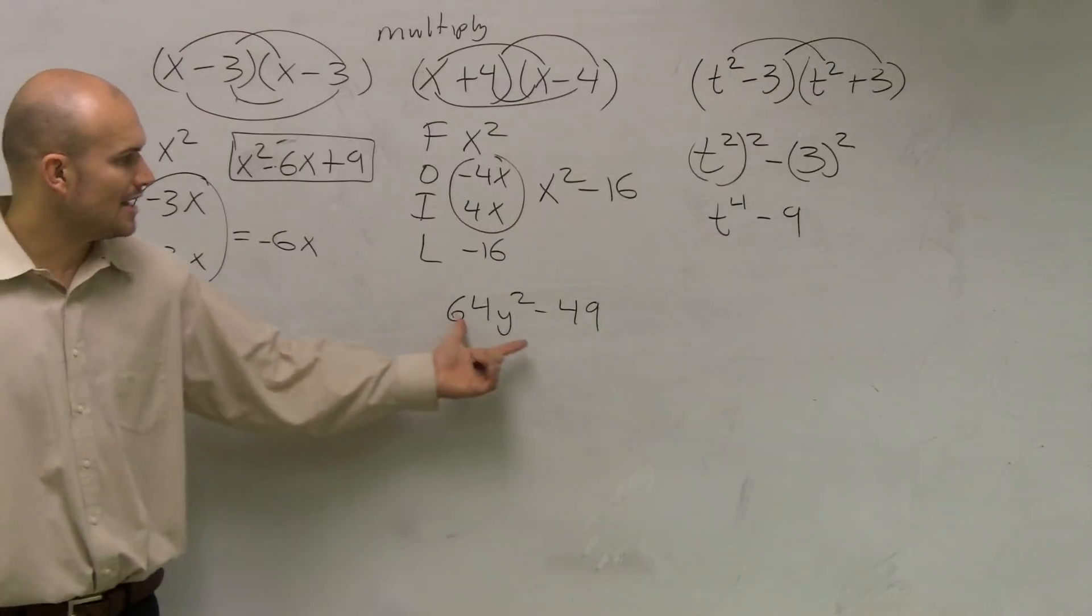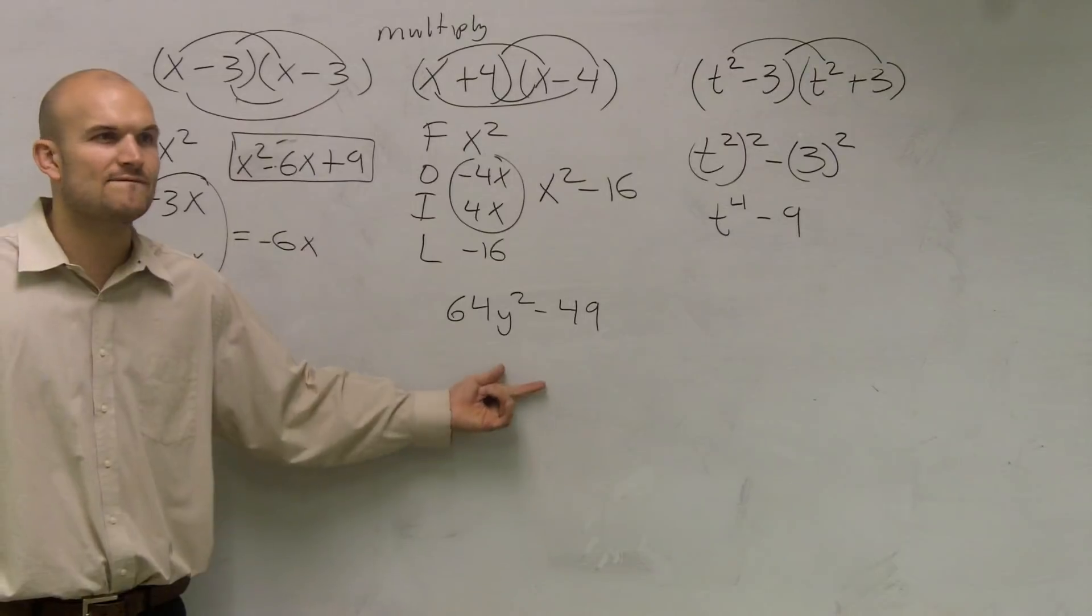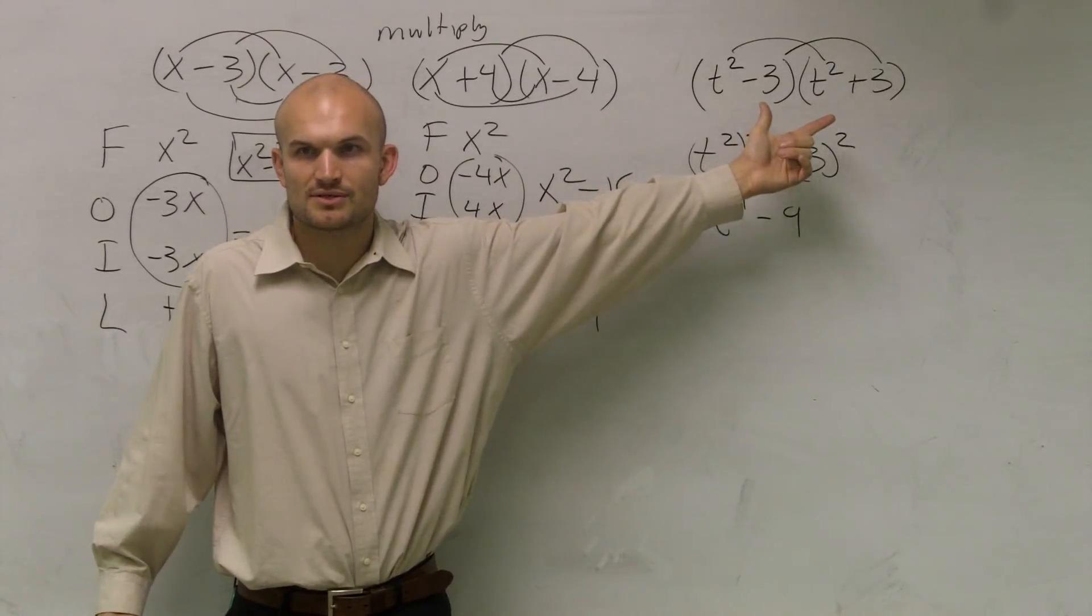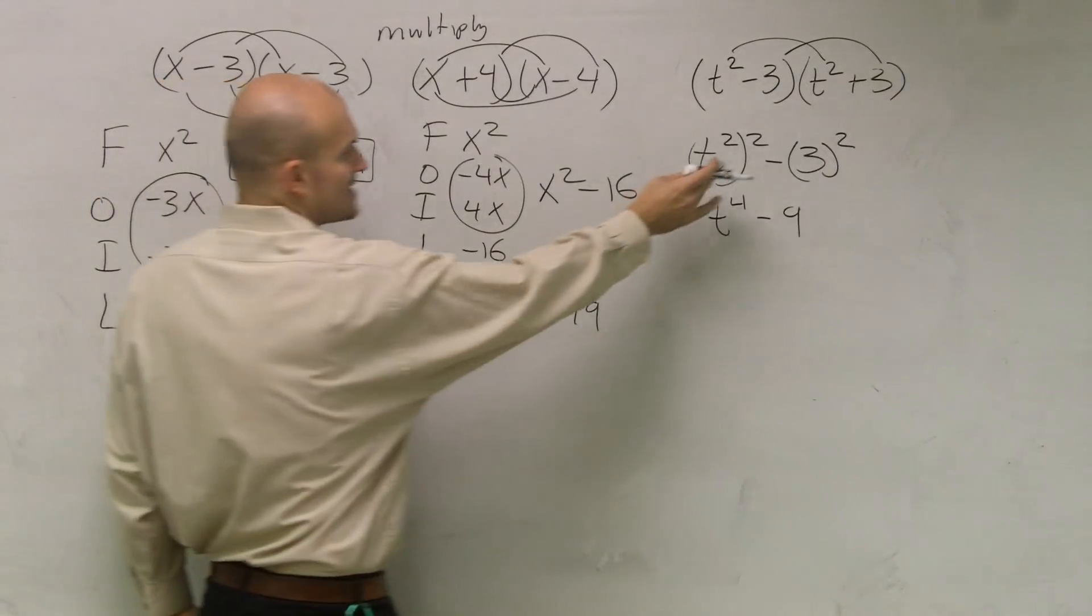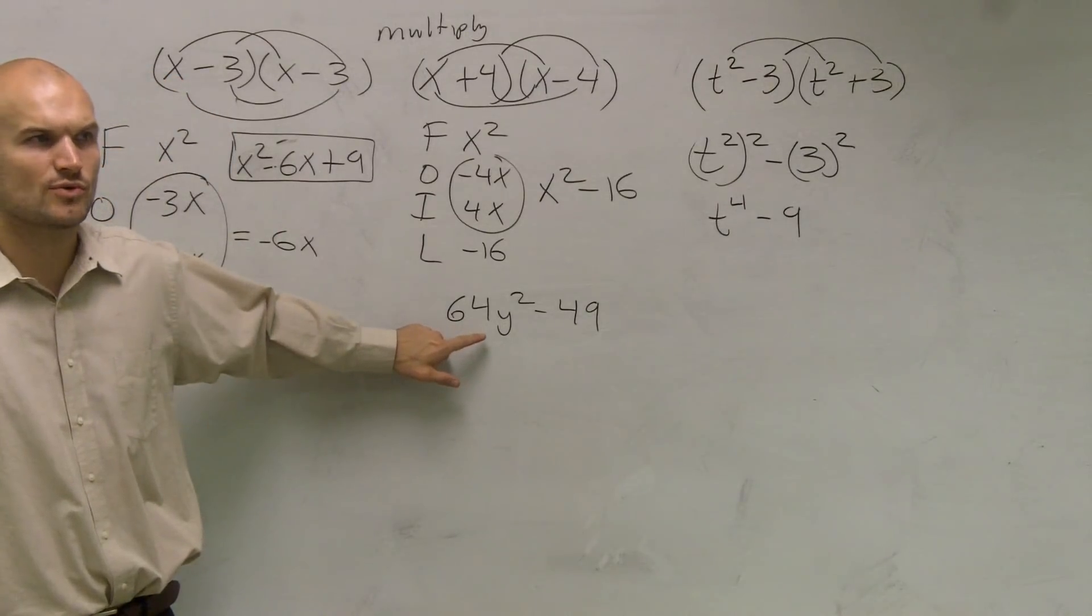So this problem gave me t to the fourth minus 9. Now, ladies and gentlemen, how do you think, what they're asking here is, how can I rewrite this? How can I factor this? How can I write this problem as a product of two numbers? Well, you've got to say, how can you rewrite this as a term squared minus another term squared?